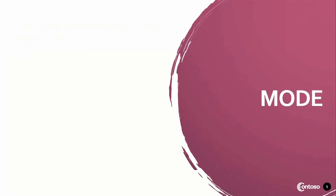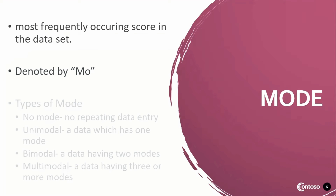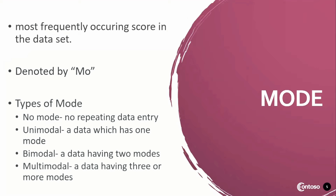And lastly, we have the mode. Mode is the most frequently occurring score in the data set. It is denoted by mo. We have types of mode: no mode, meaning there is no repeating data entry; unimodal, a data which has one mode; bimodal, a data having two modes; and multimodal, a data having three or more modes.